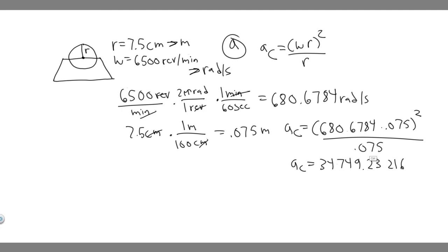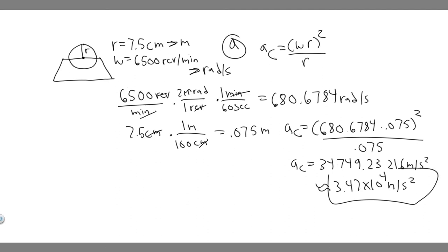When you compute that, A sub C equals approximately 34,749.23, which is in meters per second squared. Rounding, that's 3.47 times 10 to the 4 meters per second squared. You might get a slightly different answer depending on rounding.